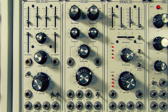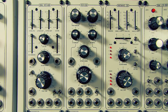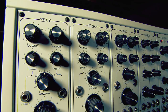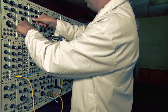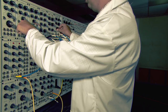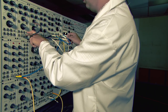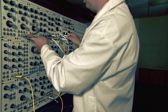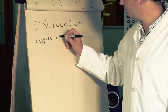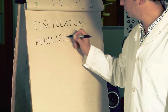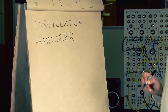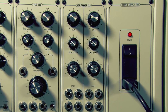We previously learned how the heart of every modular synthesizer is the oscillator — and the more the better. Using voltage control, we were able to alter the pitch of the oscillator. Now we'll learn about another basic module: the voltage-controlled amplifier, or VCA.